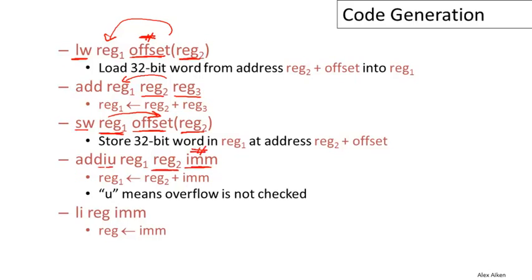Add immediate unsigned takes a value in register two and an immediate value, which is just a number that's a constant that's directly embedded in the code. It adds that to the value in register two and stores the result in register one. The unsigned aspect here just means that the overflow is not checked. Finally, load immediate just takes a constant that's in the code and puts it into the register that's named as the first argument.